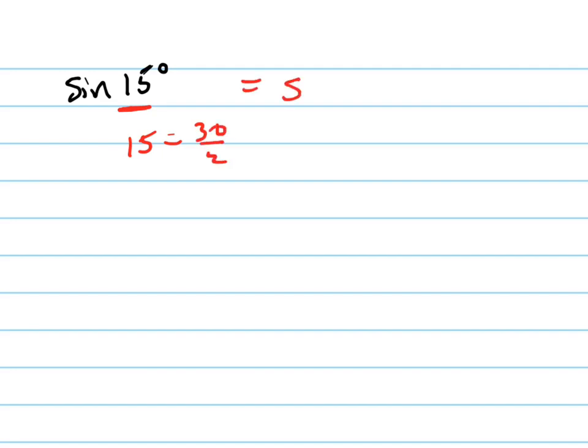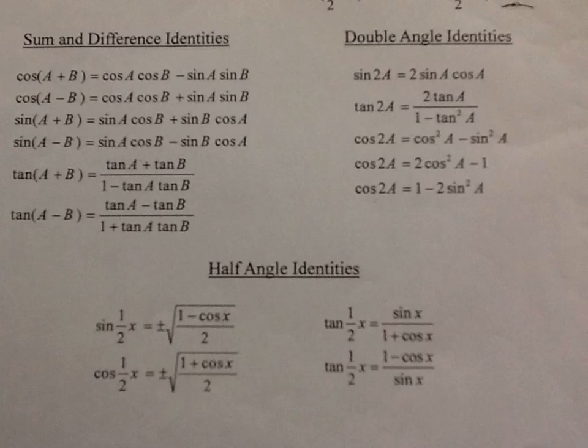So I'm going to rewrite this as the sine of 30 over 2. And if I look at my cheat sheet, I know the sine of 30 over 2 is related to the cosine of 30. So I'm going to write that.